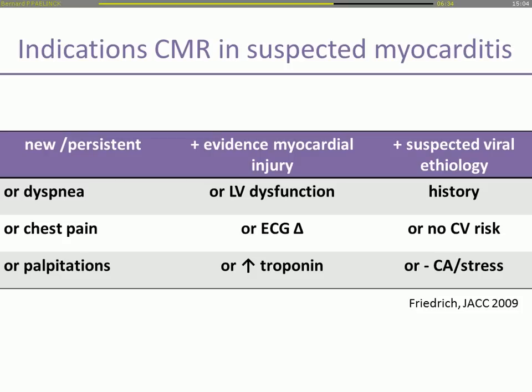In the ESC so-called white paper, indications for CMR in suspected myocarditis were proposed: if you have new or persistent symptoms of shortness of breath, chest pain, or palpitations, together with any evidence of myocardial injury such as LV dysfunction, ECG changes, or an increase in troponin, and a suspected viral etiology — a history of systemic viral infection or upper airway infection two weeks prior — in a patient with no cardiovascular risk factors and a negative angio, then you should perform a CMR study.